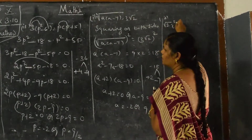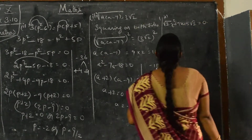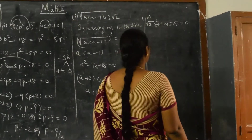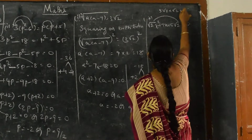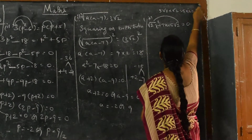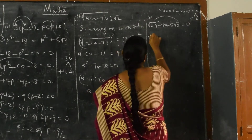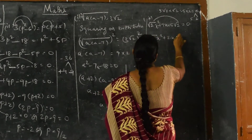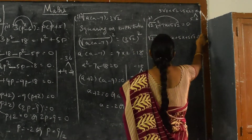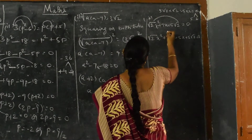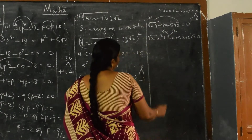Next problem: √2·x² + 7x + 5√2 = 0. Using the rainbow model, multiply √2 by 5√2 to get 5 × 2 = 10. Split 7 as 2 and 5 (since 2 × 5 = 10). So you write: √2·x² + 2x + 5x + 5√2 = 0. Note that √2 can be written as √2 × √2, so in the first two terms √2·x is common — take it out.